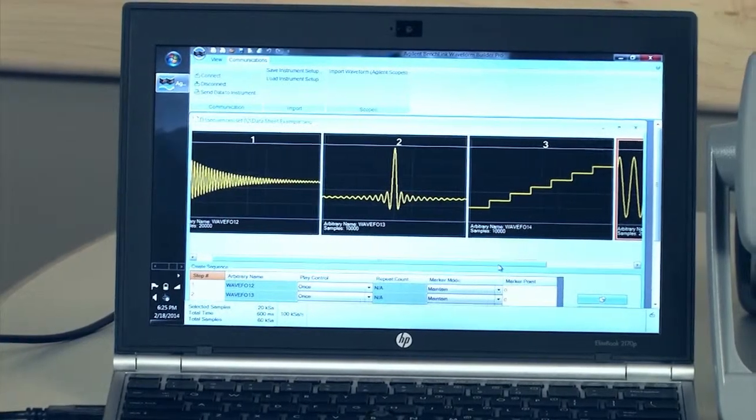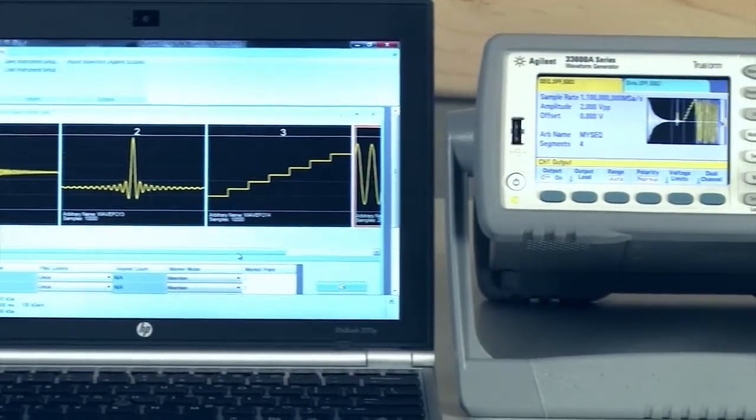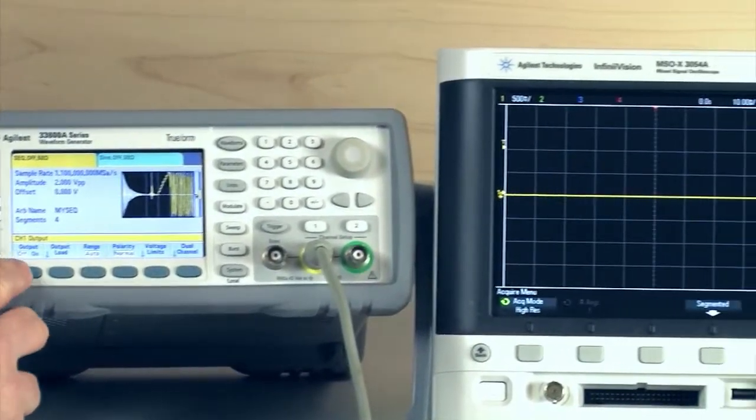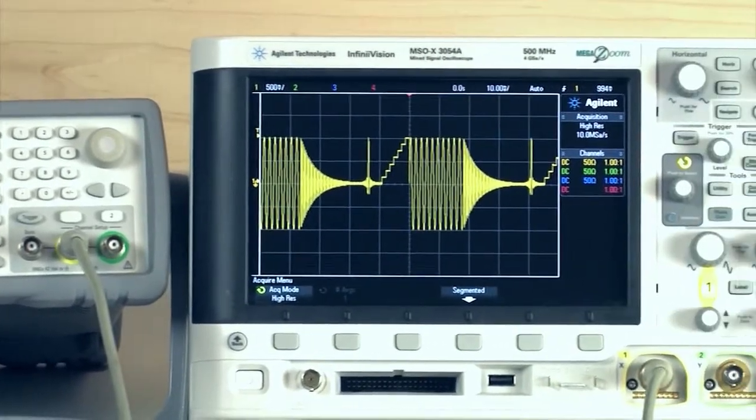Here we are using Agilent's Waveform Builder Pro software to create and combine segments to make a complex waveform, then downloading it to the generator. You can have up to 512 segments in a sequence.